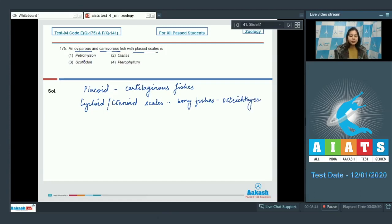Let us read the options. Number 1. Petromyzon is incorrect as it is a cyclostome. Number 2. Clarias is incorrect as Clarias is a bony fish. Number 3. Scoliodon is correct as Scoliodon is dog fish also called shark. This Scoliodon is a cartilaginous fish which is oviparous and carnivorous. Number 4. Pterophyllum. Pterophyllum is also incorrect as Pterophyllum is also a bony fish.